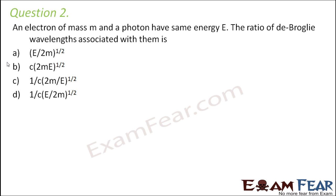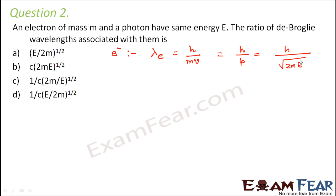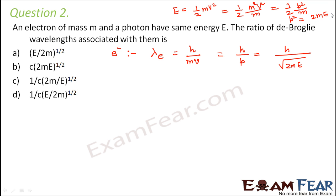Question number 2: An electron of mass m and a photon have the same energy E. The ratio of De Broglie wavelengths associated with them is? For the electron, the wavelength is h by mv, which equals h by p, which equals h divided by root over 2mE, since energy equals p squared by 2m, so p squared equals 2mE.